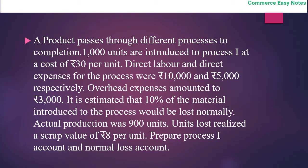In this question, we deal with process 1 and the normal loss account. 1,000 units were introduced at Rs. 30 per unit. Direct labour, direct expenses, and overhead of Rs. 3,000 are given. 10% of 1,000 gives a normal loss of 100 units, so normal output is 1,000 minus 100 = 900 units. The scrap value is Rs. 8 per unit, so 100 × 8 = Rs. 800.